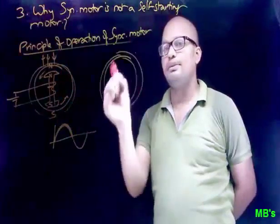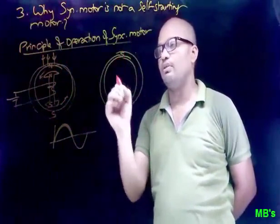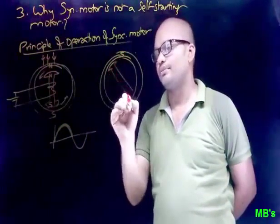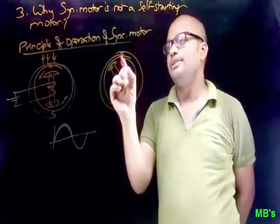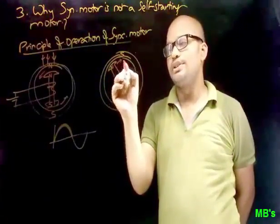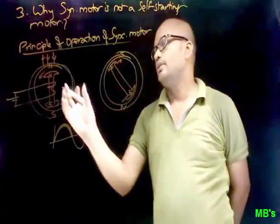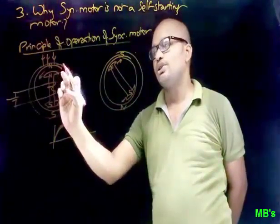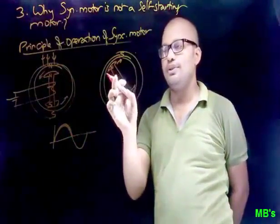the stator poles will change. Let the poles change due to the second half of the input cycle — this becomes south pole and north pole. At this position our rotor has north pole and south pole. Now observe that these are unlike poles, so they will attract. The attraction will be towards this direction, so the rotor moves anticlockwise. In the first half cycle the direction of rotation is anticlockwise, and in the second half cycle the direction of rotation of the rotor is clockwise.